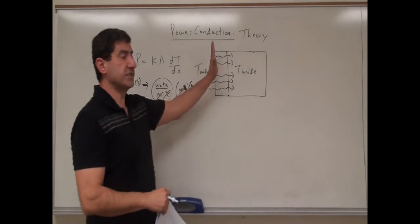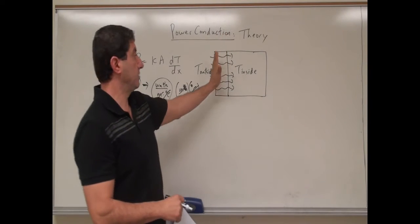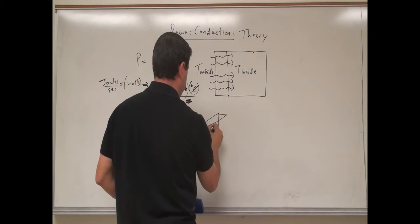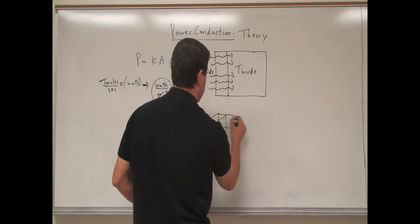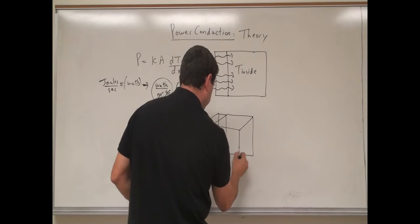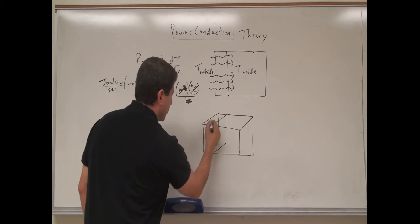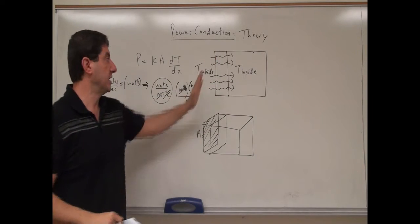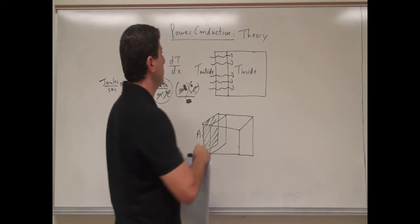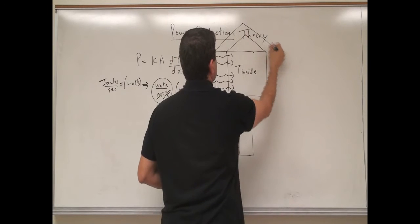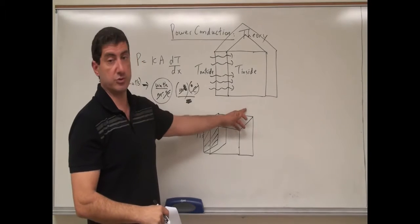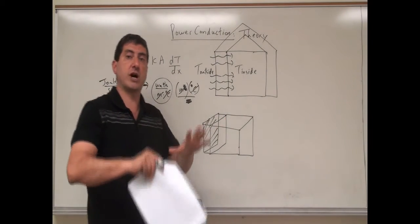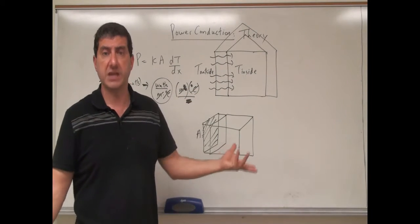The surface area is the cross-sectional surface area through which the heat is flowing — the area coming out of the board. Drawing this in 3D: a wall has a thickness and the inside of the house is on one side. The house loses heat not only through one wall but also through the roof, the sides, and to the ground. So the bigger the surface area of the house, the more heat it loses or gains.